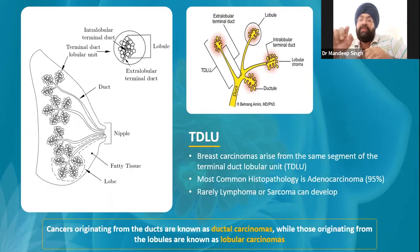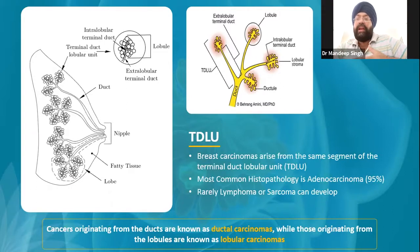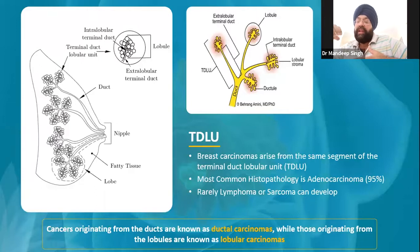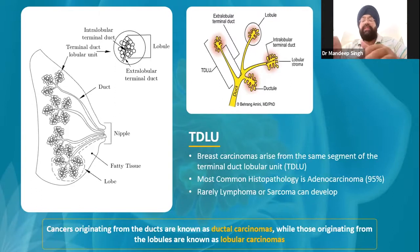In the terminal ductal lobular unit, the milk duct branches out — one duct drains to one terminal ductal lobular unit, where it forms the extralobular duct and the intralobular duct. The intralobular duct leads to the lobules, where milk formation occurs. The lobules drain to the intralobular duct, which drains to the extralobular duct, then to the main duct, and finally to the nipple. This is how milk formation and drainage actually occurs.